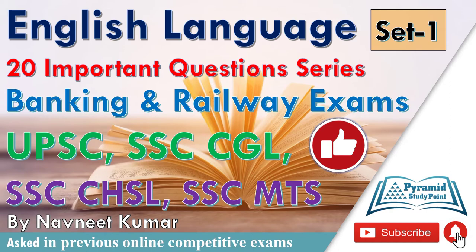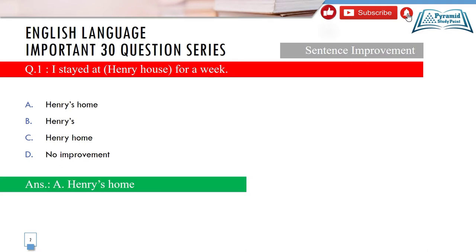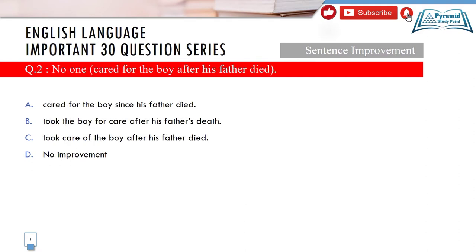Let's start with Question number 1, which is a Sentence Improvement question. The sentence is: 'I stayed at Henry House for a week.' The bracketed part is 'Henry House.' This is about Henry's house, so it involves a possessive — it requires an apostrophe-s. This is a sentence improvement on possessives.